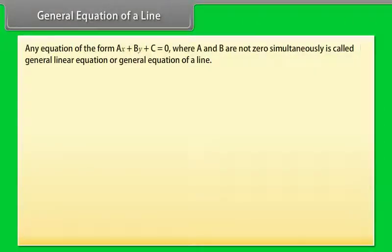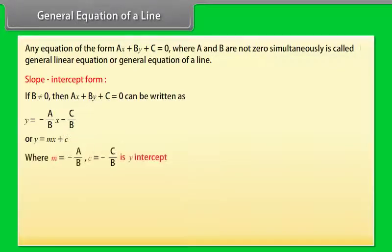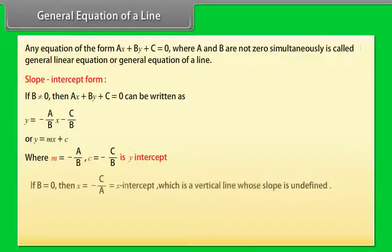An equation of the form ax + by + c = 0, where a and b are not simultaneously zero, is called the general linear equation or general equation of a line. Slope-intercept form: if b ≠ 0, then ax + by + c = 0 can be written as y = (−a/b)x − c/b, i.e., y = mx + c, where m = −a/b and c = −c/b is the y-intercept. If b = 0, then x = −c/a is a vertical line with undefined slope.